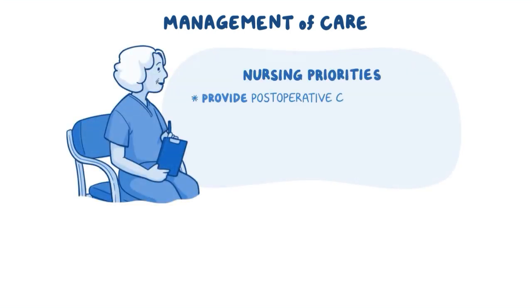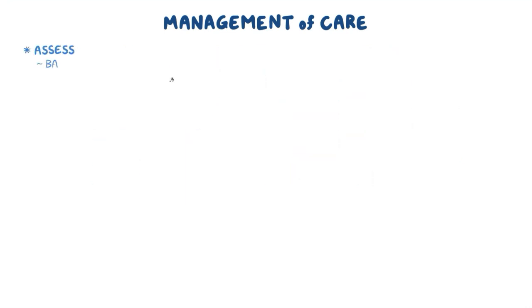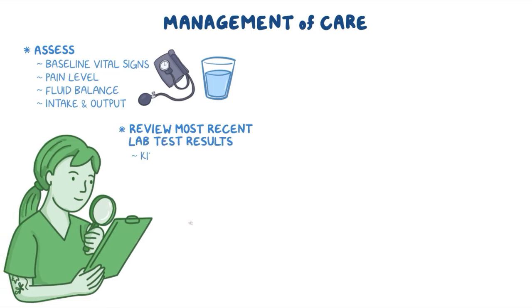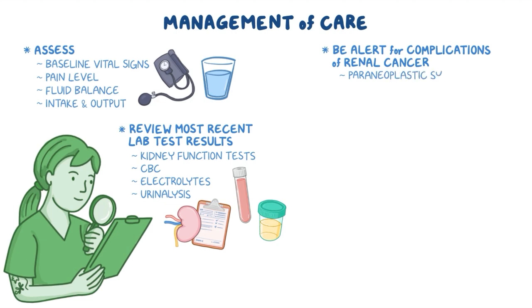Nursing priorities include providing post-operative care, supporting renal function, monitoring for complications, and providing psychosocial support. Begin by assessing the client's baseline vital signs, pain level, fluid balance, intake and output, and review their most recent laboratory test results, including kidney function tests, CBC, electrolytes, and urinalysis. Be alert for complications of renal cancer, including paraneoplastic syndromes, and report to the healthcare provider if assessments reveal problems like hypertension, hyperglycemia, or hypercalcemia, and administer medications as prescribed.